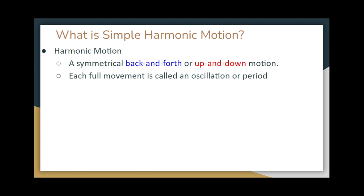We call each full movement an oscillation or a period. When it goes back and forth, that's one period or oscillation, same with moving up or down. A period is the time it takes to complete one full cycle. So if I asked you what the period of an Earth year is, you would say 365 days, because that's the amount of time it takes for the Earth to complete one cycle around the sun.